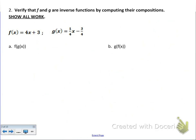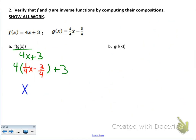Question 2: Verify that f and g are inverse functions by computing their compositions — show all work. We have f of x equals 4x plus 3 and g of x equals one-fourth x minus 3-fourths. We take our f equation and plug in the g equation for x. Distributing through the 4: 4 times one-fourth x is x, and 4 times negative 3-fourths is negative 3. Then plus 3 — negative 3 plus 3 cancels, leaving just x, which is exactly what we want when verifying.